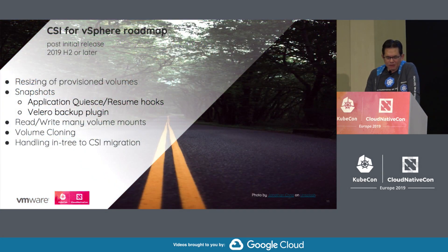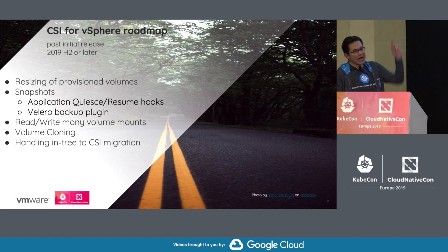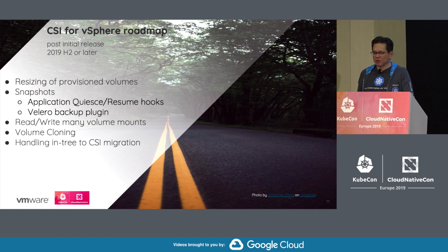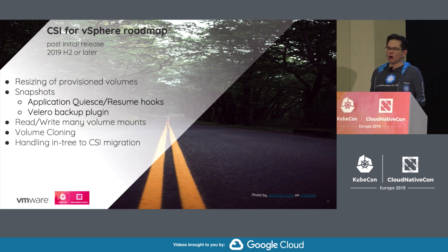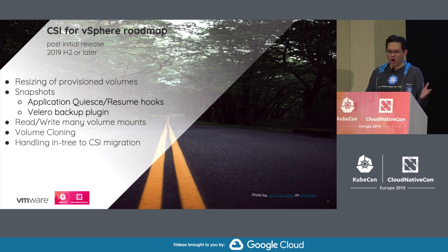On the roadmap for the second half of 2019: supporting resizing of already-provisioned volumes — that was a recent enhancement to the CSI spec, so it takes time to catch up. There's also an effort within the Kubernetes storage SIG to support snapshots. Snapshots are built into vSphere, but exposing them through a cloud-agnostic wrapper takes work. The goal is that no matter where Kubernetes is hosted — public cloud or vSphere — snapshot APIs work the same way.